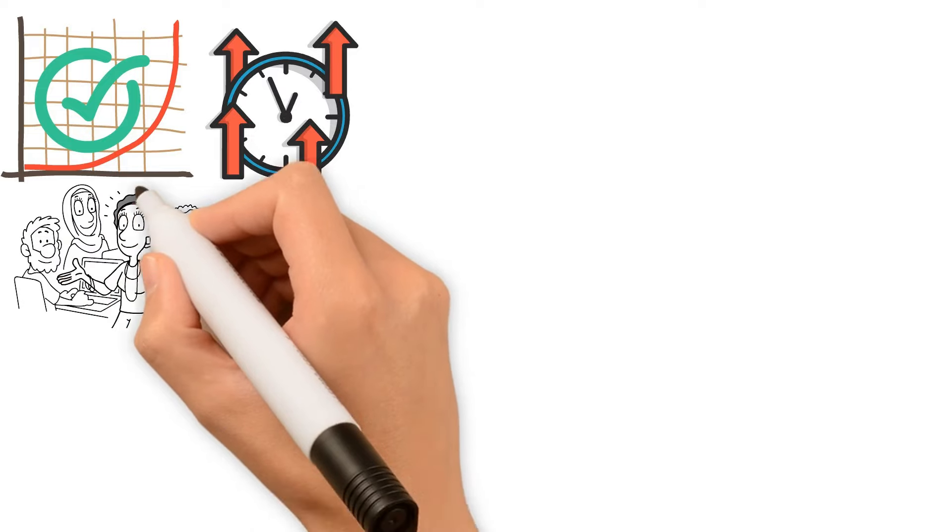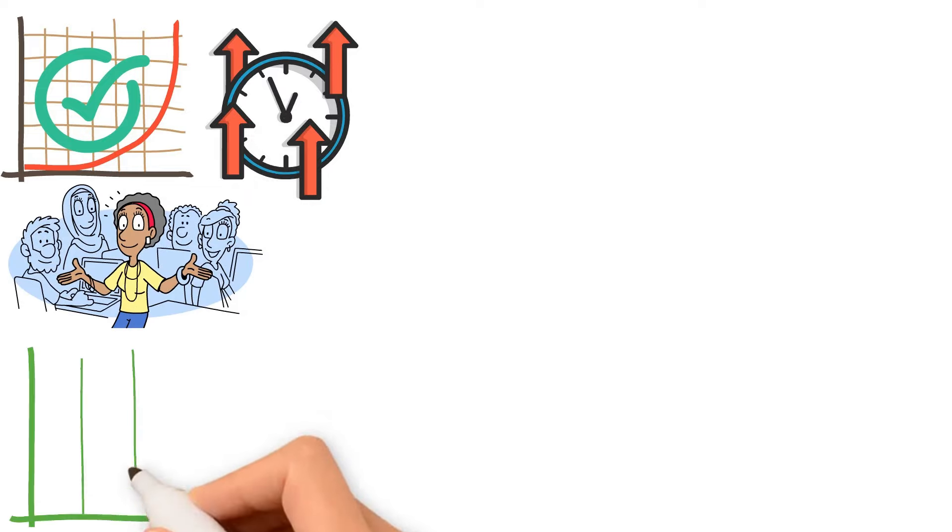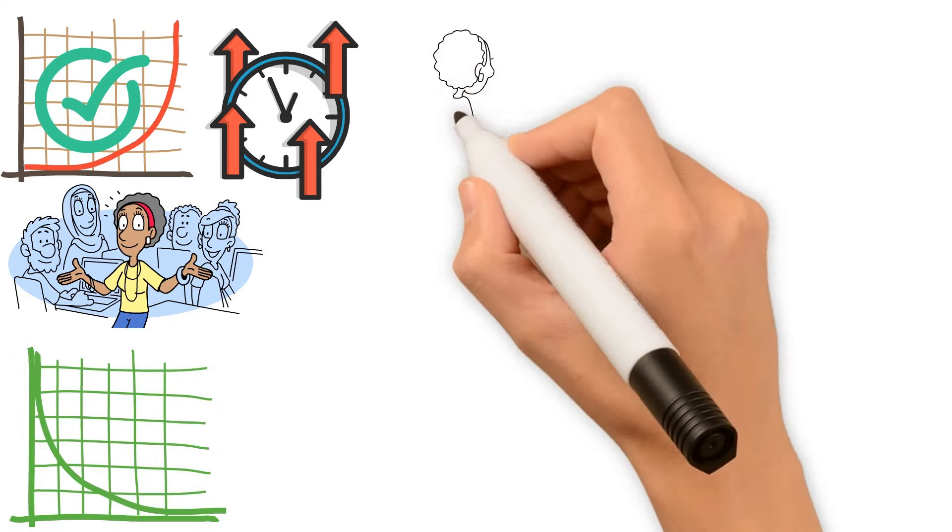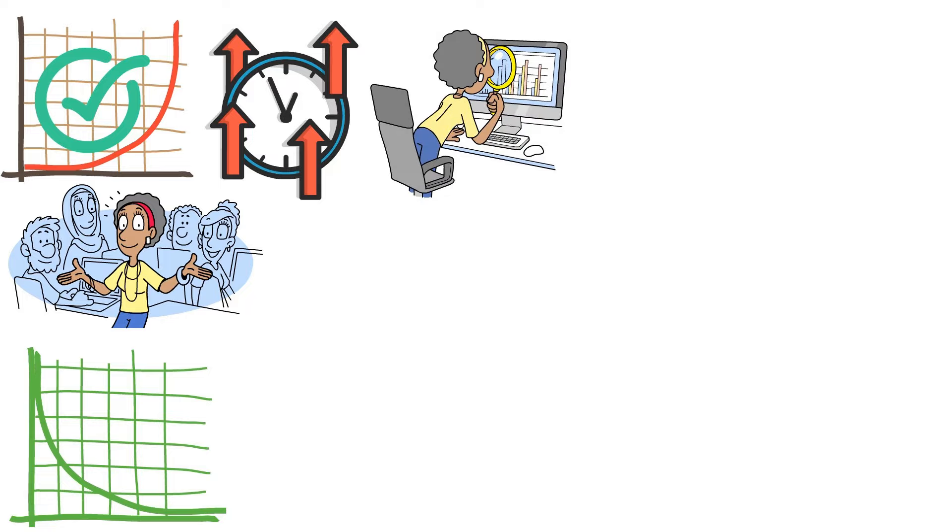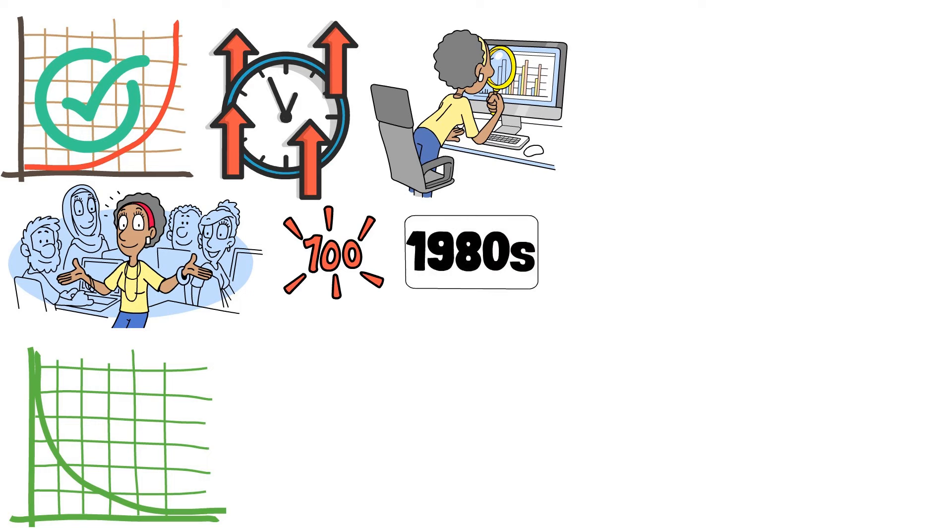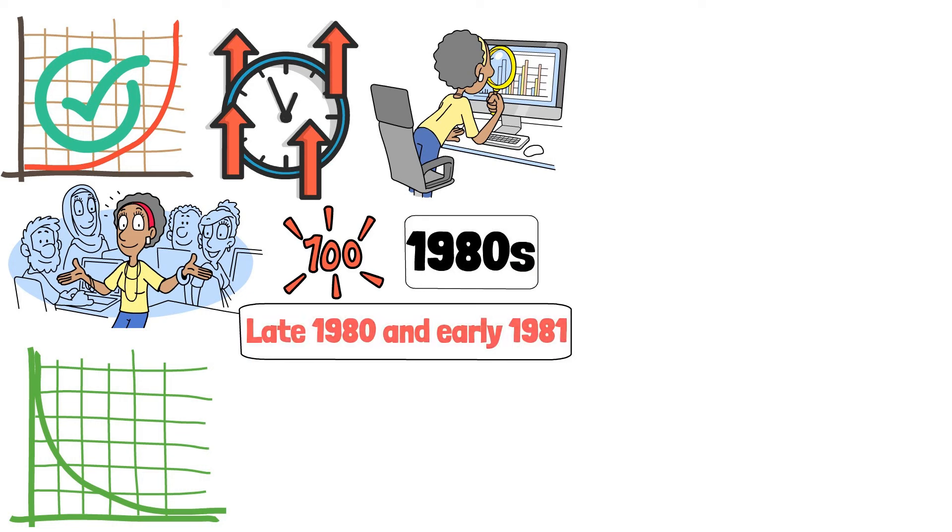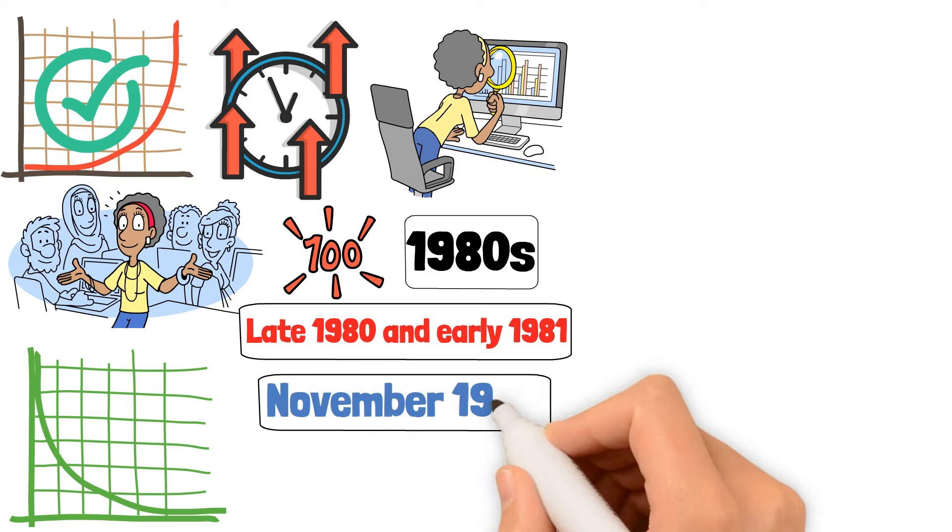That's like a stroll down memory lane, right? The yield curve has inverted several times before economic downturns. It has a remarkable track record, predicting recessions with eerie accuracy. In the early 1980s, the U.S. was in a recession. The yield curve inverted in late 1980 and early 1981, and the recession lasted until November 82. That's nearly two years of economic hardship.